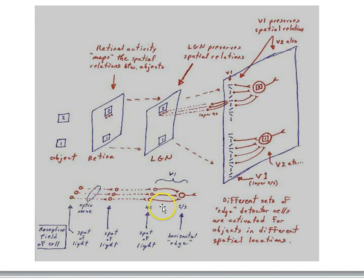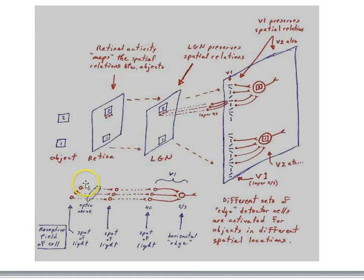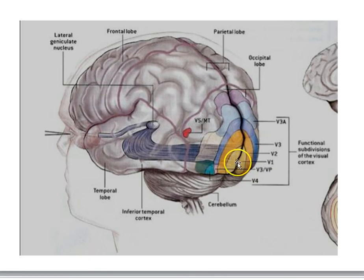Just to recap: how is it that cells can be edge detectors? There's a convergence of these cells onto one common cell, and that cell only becomes active when all three inputs are simultaneously active — that condition is met when you have a horizontal bar of light, for example. So the visual cortex can be thought of as a map of the surface of the retina, just as somatosensory cortex is a map of the surface of the skin.